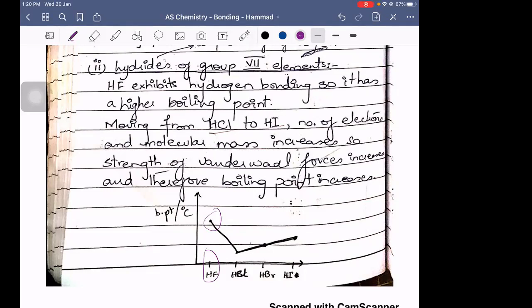Whereas HCl, HBr, and HI will only have permanent dipole-dipole forces present. This is the reason why HF, because it has hydrogen bonding along with PDDF, permanent dipole-dipole force, has a higher boiling point.